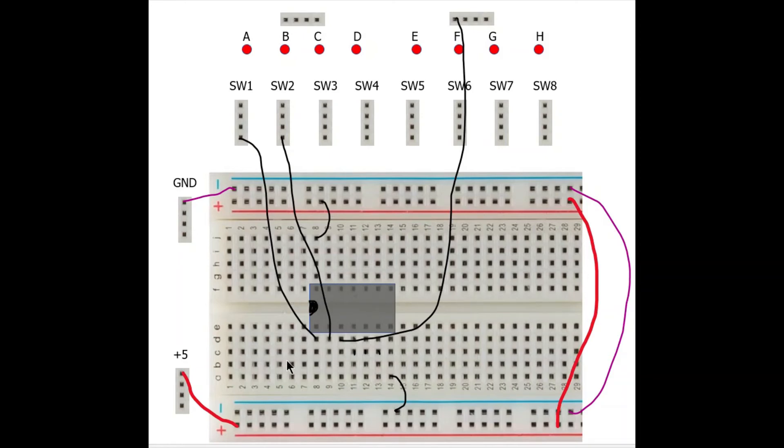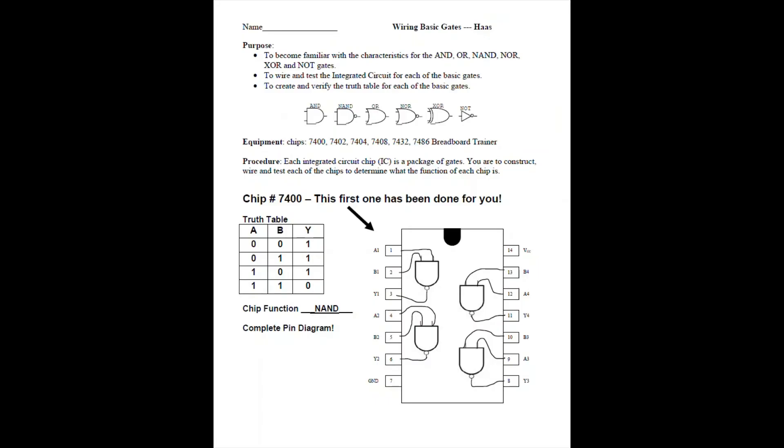Again, each chip you're working with, and this is pretty normal, each chip will contain multiple copies of the same logic gate. So you're going to plug it in just like this, you're going to turn it on of course, flip your switches, see which combinations light up your light, give you a logic 1. And based on that, you should be able to determine what type of logic gate is on the chip.